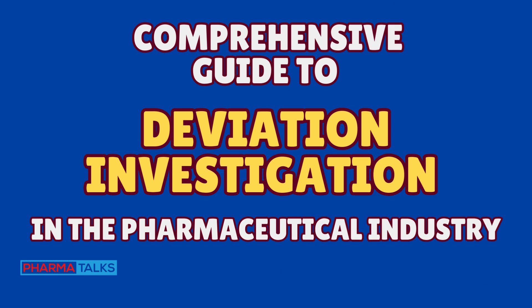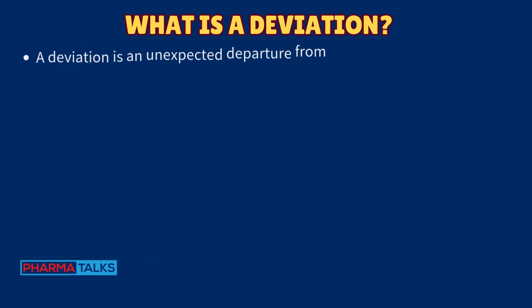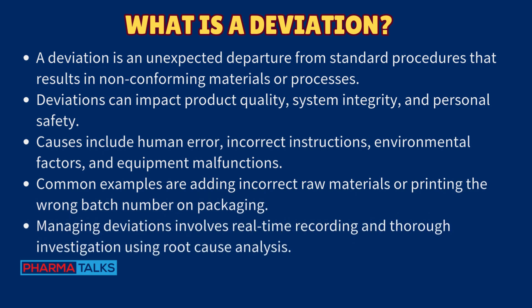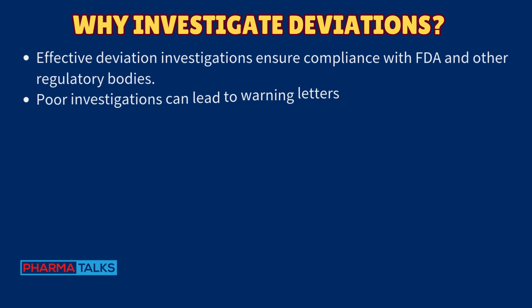Welcome to this comprehensive guide to deviation investigation in the pharmaceutical industry. A deviation is an unexpected departure from standard procedures that results in non-conforming materials or processes. Deviations can impact product quality, system integrity, and personal safety. Causes include human error, incorrect instructions, environmental factors, and equipment malfunctions. Common examples include adding incorrect raw materials or printing the wrong batch number on packaging.